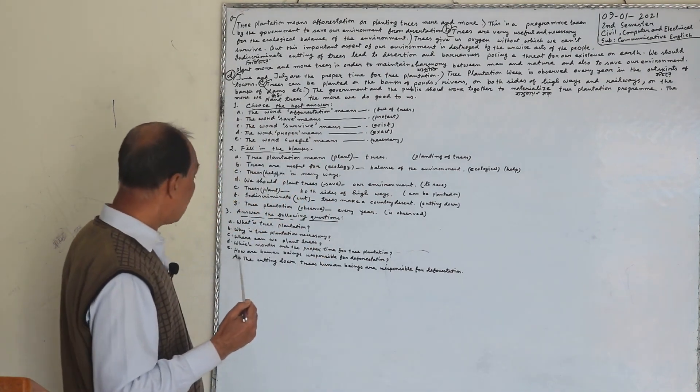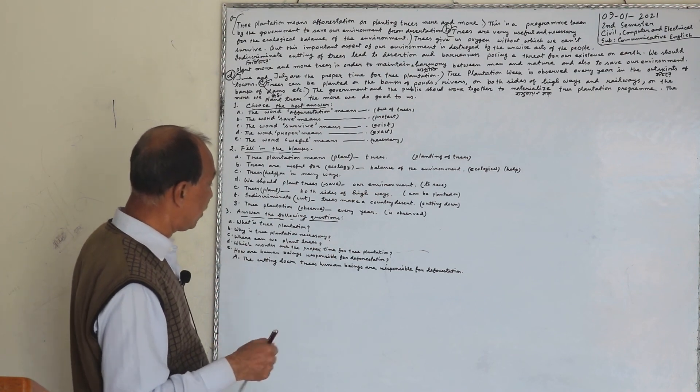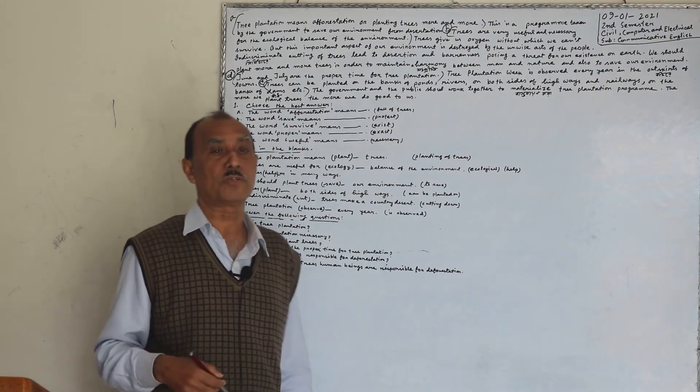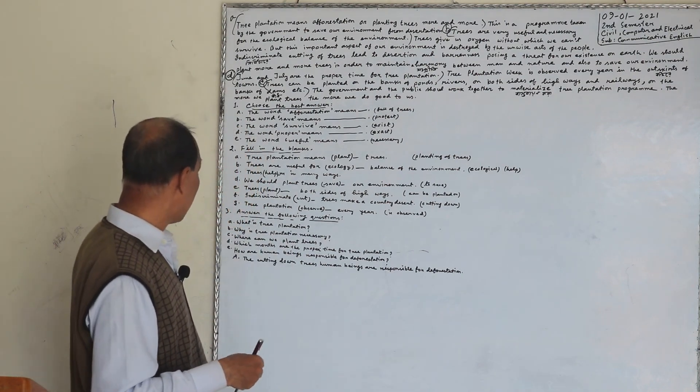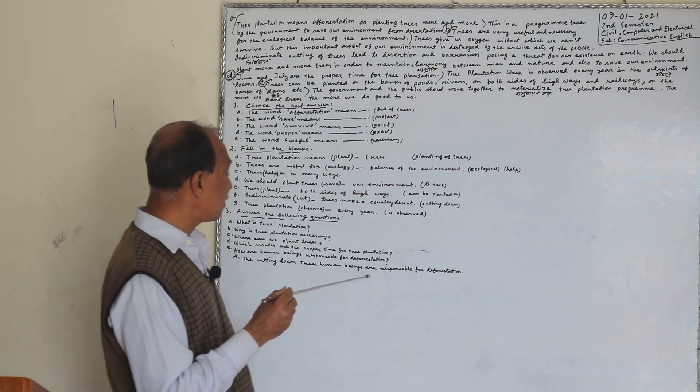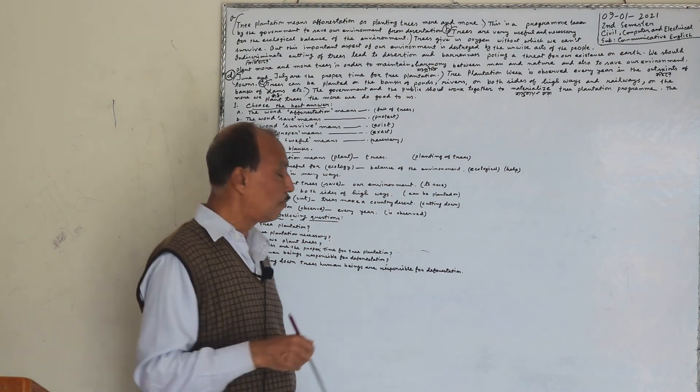E, how are human beings responsible for deforestation? Gaspala kete phala arjuno va ujar karar juno kara dai, ki bhave dai hai. The cutting down trees human beings are responsible for deforestation. Gaspala kete phala helle gaspala ujar karaha hai.